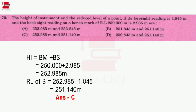Next question: the foresight reading is 1.845 meters and the backside reading on a benchmark of RL 250 meters is 2.985 meters. The height of instrument is 252.985 meters. The reduced level of the point = 252.985 minus 1.845 = 251.14 meters.